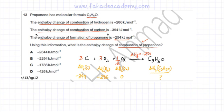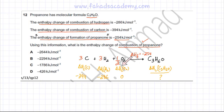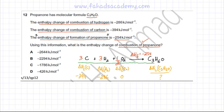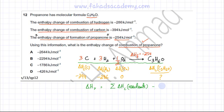The enthalpy of this formation reaction is already known as minus 254 kJ/mol. We can find the unknown using the formula: the enthalpy of a reaction equals the sum of the enthalpies of combustion of the reactants, minus the sum of the enthalpies of combustion of the products.